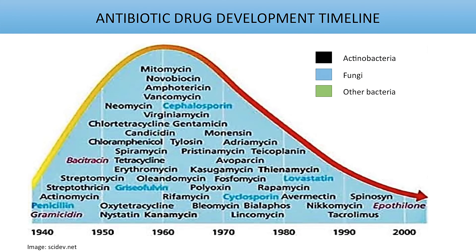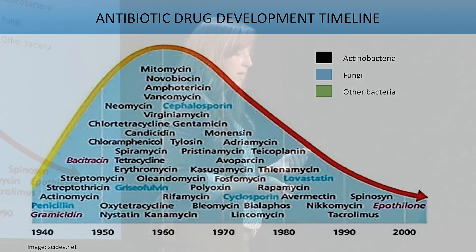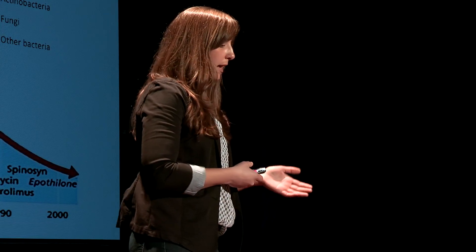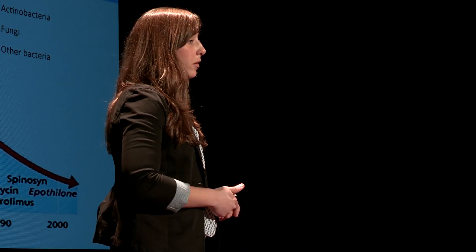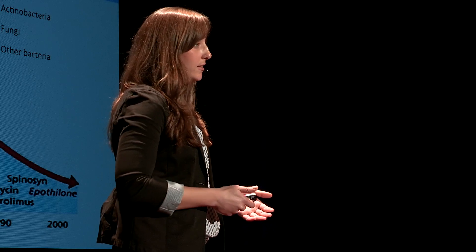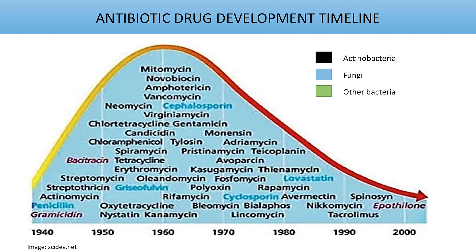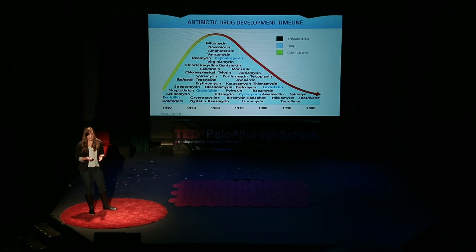Well, where do we stand right now in terms of developing new antibiotics? This is a chart showing the development of antibiotics per year from about 1940 to 2000. You can see that there is a real golden age between about 1950 and 1970 where we were really pumping out antibiotics into the pipeline, and most of these were discovered by large pharmaceutical companies like Eli Lilly. Now we're really declining in this era, and you can see there's really a need for the development of new antibiotics.